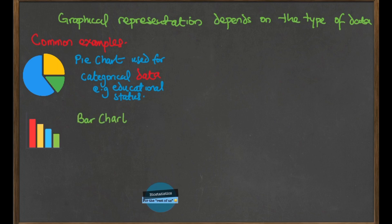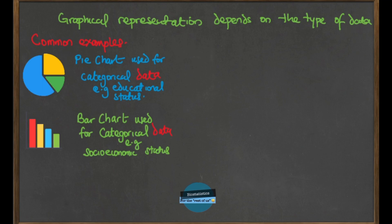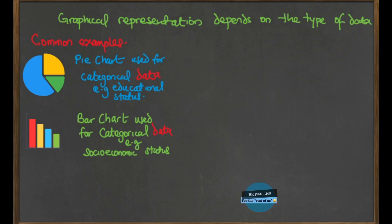Next is the bar chart, which is also very popular and is also used for categorical data, just like the pie chart. You can see that the bars are not joined — they are separate — meaning each bar is a separate category. An example could be socioeconomic status with categories like high, middle, and low, where each bar represents one category. Anytime you have categorical data, think of either a bar chart or a pie chart. Bar charts and pie charts are used only for categorical data.